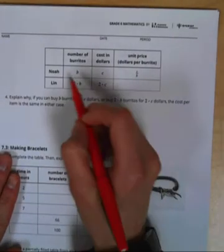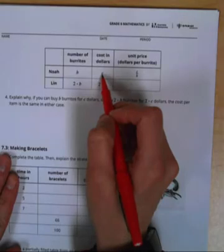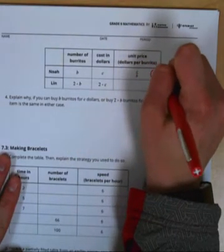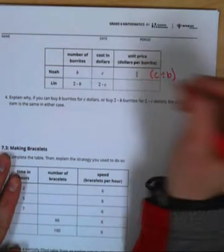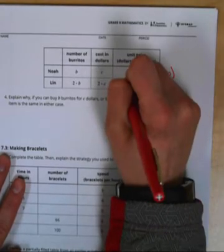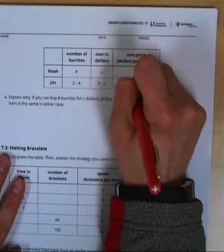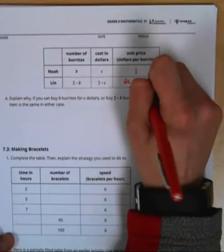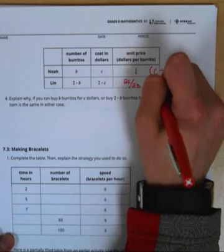We have Noah who has B burritos and C cost. To find their unit price they divided C divided by B, it's just written in fraction form. To find Lynn's unit price we can do the same thing. We could do 2C divided by 2B, which if we simplify that would equal C over B.